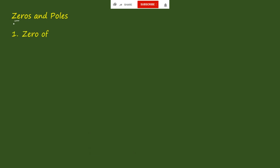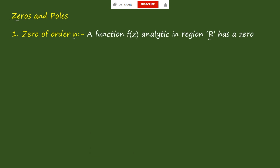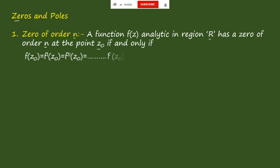Now, zeros of order n: the function f(z) analytic in the region R has a zero of order n at a point z₀ if and only if f(z₀) = f'(z₀) = f''(z₀) = ... = f^(n-1)(z₀) = 0, and f^(n)(z₀) should not be equal to 0.